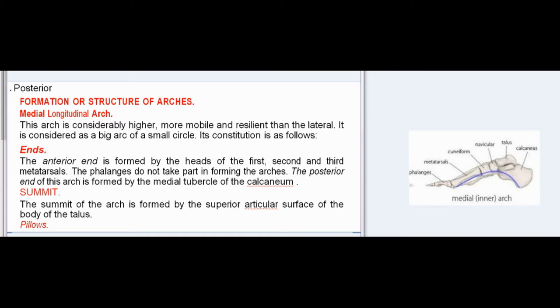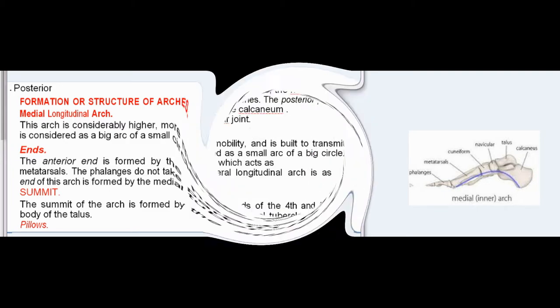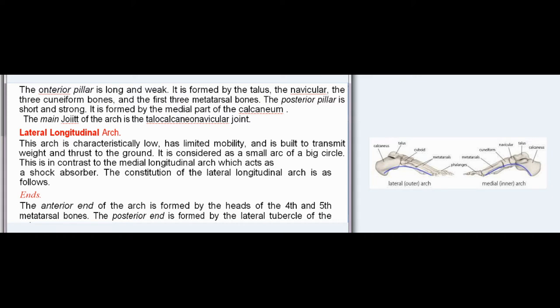The phalanges do not take part in forming the arches. The posterior end of this arch is formed by the medial tubercle of the calcaneum. The summit of the arch is formed by the superior articular surface of the body of the talus. The anterior pillar is long and weak; it is formed by the talus, the navicular, the three cuneiform bones, and the first three metatarsal bones. The posterior pillar is short and strong; it is formed by the medial part of the calcaneum. The main joint of the arch is the talocalcaneonavicular joint.